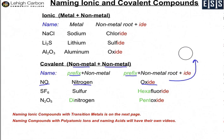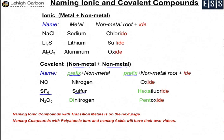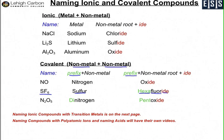Now we look at the next example: sulfur with six fluorines, SF6. Because sulfur is a single element you just use the full term sulfur. On the fluorine you're going to use the prefix hexa, which represents six. Your root for fluorine is F-L-U-O-R, and then your IDE ending. So it's sulfur hexafluoride.